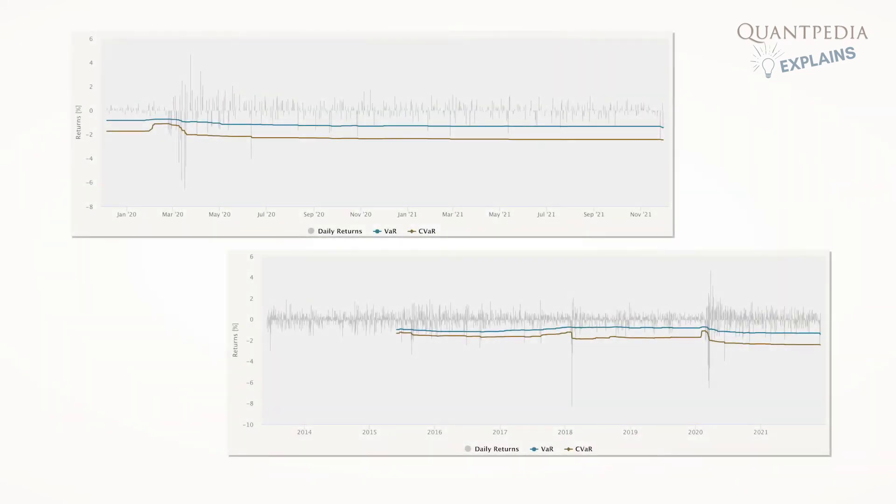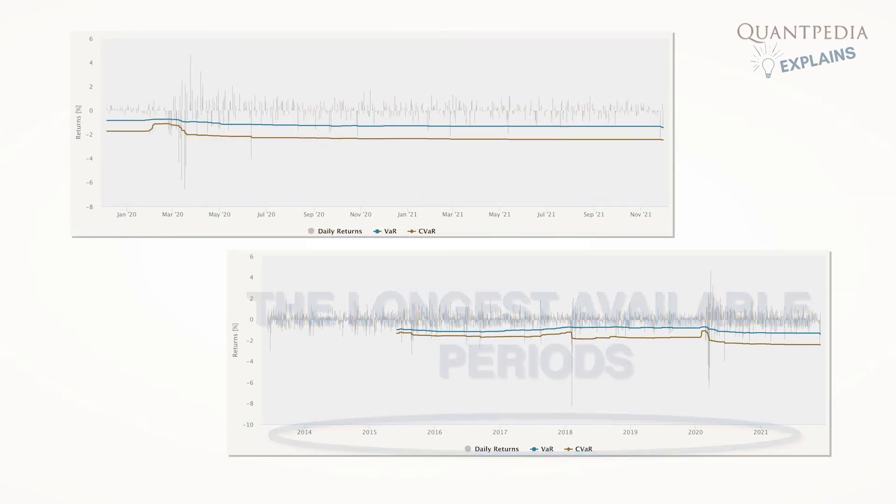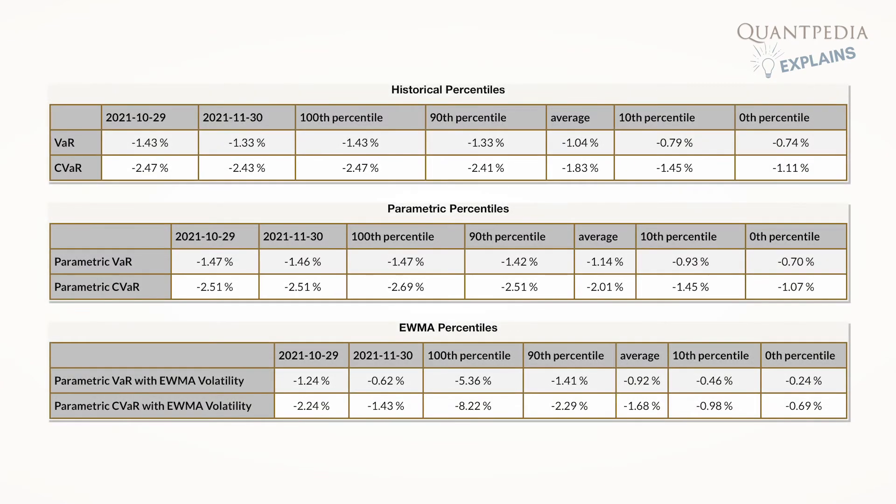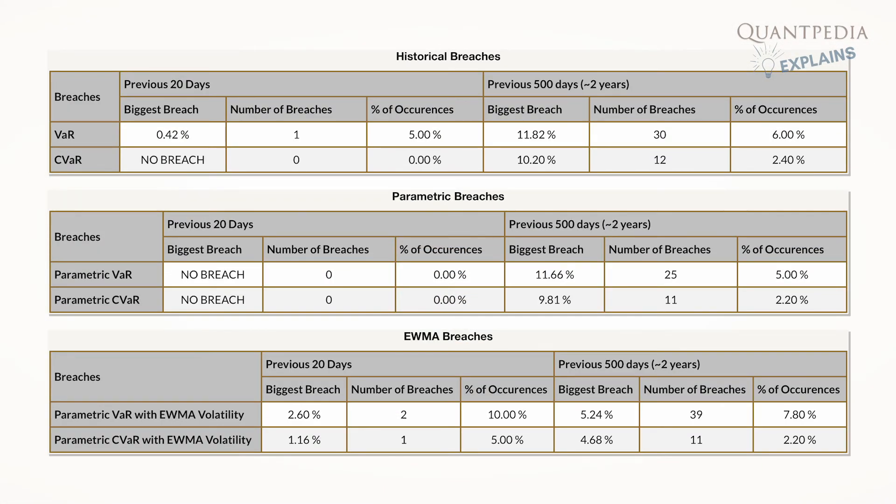You can review VAR and CVAR magnitudes during the last two years and the longest available periods. Additionally, you can check the statistical distribution of VAR and CVAR magnitudes, their values at the end of the last two months, and statistics of VAR and CVAR breaches over the previous two years.